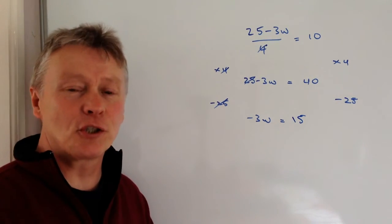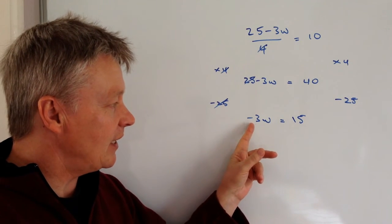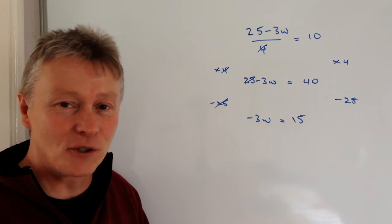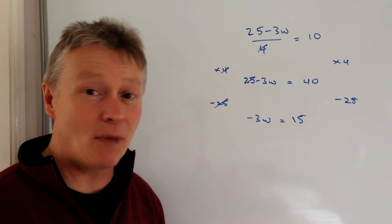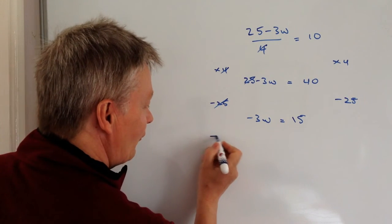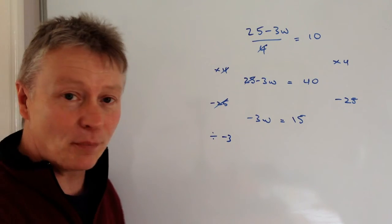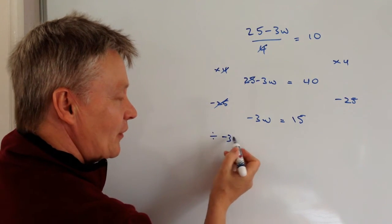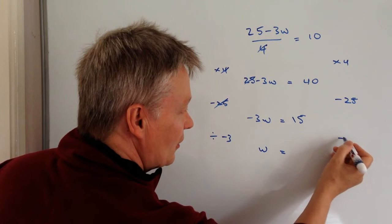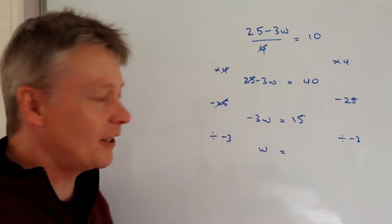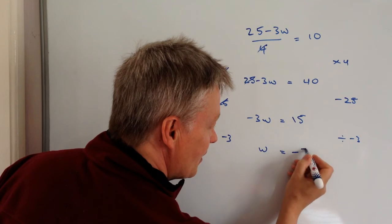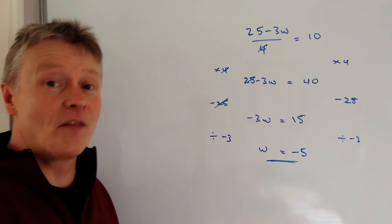Now at this point it should give you some degree of confidence, because 3 divides into 15 as a whole number. I'm not suggesting you're always going to get a whole number as a solution, but generally speaking when you get to this point, the arithmetic itself is relatively straightforward. So what we're going to do is divide through by minus 3 — this becomes minus 3 divided by minus 3, which is a positive value of 1 of W. And on this side, 15 divided by 3 is 5, but it's a negative number — a positive divided by a negative gives a negative value of 5. And that would answer this particular question.